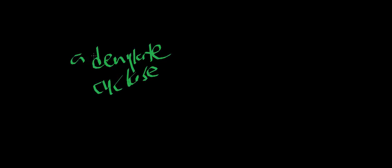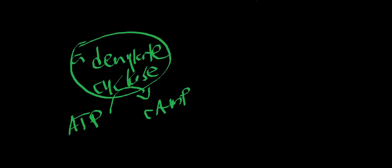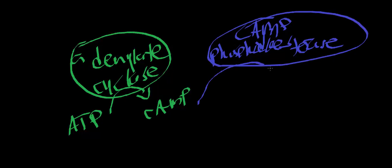Calcium activates adenylate cyclase, which we already know takes ATP and converts it to cyclic AMP. Calcium also activates cyclic AMP phosphodiesterase — the enzyme that takes cyclic AMP and converts it to just AMP, specifically 3-prime, 5-prime cyclic AMP to 5-prime AMP.